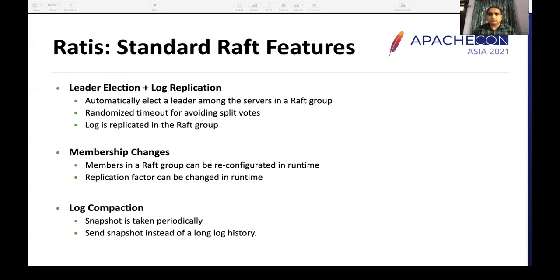RATIS supports membership changes, allowing cluster reconfiguration at runtime. You can increase the priority of certain nodes, add or remove nodes, and change the replication factor without any downtime. It also has a log compaction feature — you don't need to maintain the full history of logs from the beginning. Snapshots can be triggered periodically, giving a point-in-time copy. When a new node is added, the leader sends a complete snapshot of transaction history to help the new node catch up, rather than sending the full log history.